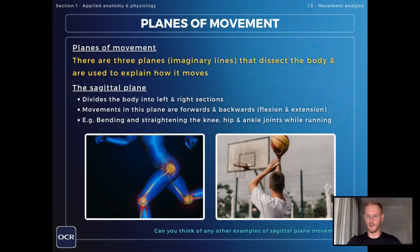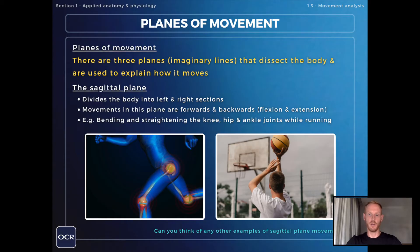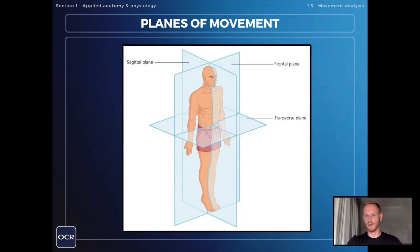The final plane that you need to know about is the sagittal plane, which divides the body into left and right sides. The movements in this plane are flexion and extension, in other words forwards and backwards movements. Good examples include the bending and straightening of the knee, hip and ankle joints while running.